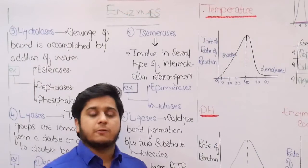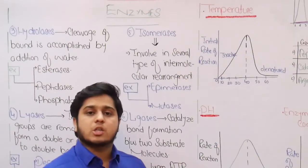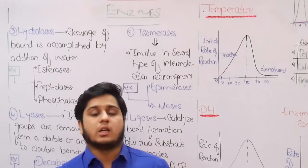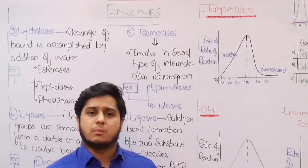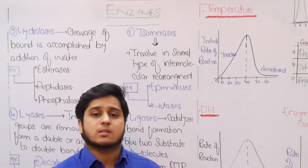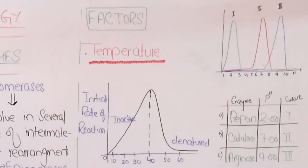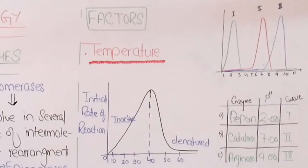Next are the factors that affect enzyme activity. The specific conditions required for proper enzyme functioning include temperature, pH, and enzyme and substrate concentration. Regarding temperature: every enzyme shows maximum functioning at a specific temperature, known as the optimum temperature. For the human body, the optimum temperature is about 37 to 40 degrees Celsius. Thermophilic bacteria have different optimum temperatures.